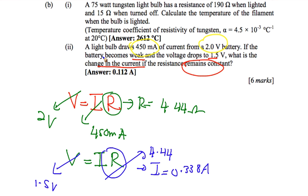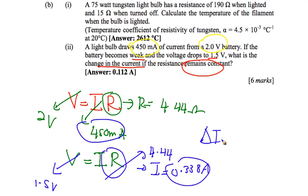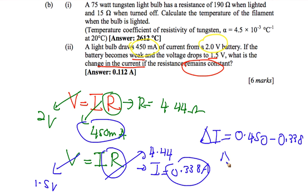The change in current is found by subtracting the second current from the first: 0.450 A minus 0.338 A. The change in current is equal to 0.112 ampere.